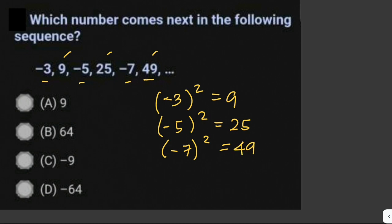Therefore, the next number in the sequence must be negative nine, which is the next odd number after negative seven. The answer is letter C.